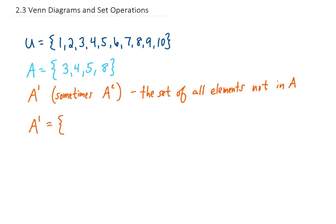So for this example, A complement is going to be all of the numbers between 1 and 10 except for 3, 4, 5, and 8. So A complement includes 1, 2, 6, 7, 9, and 10.